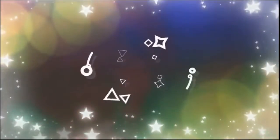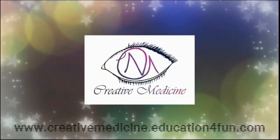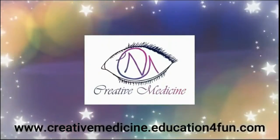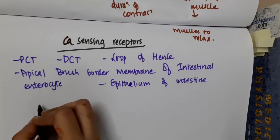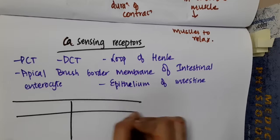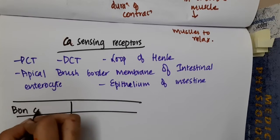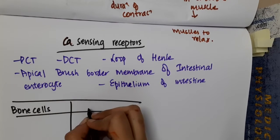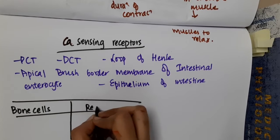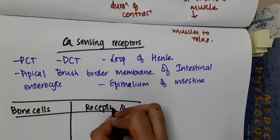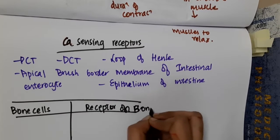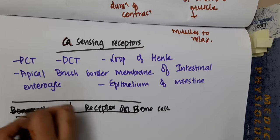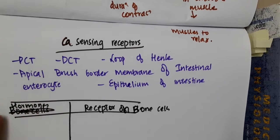Hello friends, welcome to Creative Medicine. In this lecture we will learn about bone cells. Let us now make a table on receptors on bone cells, where we will see hormones and their receptors on bone cells.